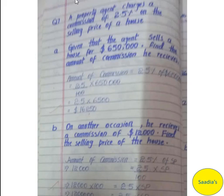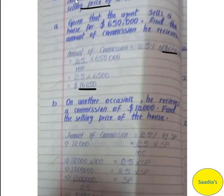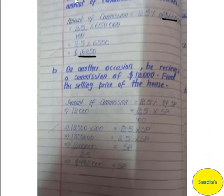Question number 7: a property agent charges a commission of 2.5% on the selling price of a house. The agent sells a house for $650,000. Find the commission he receives. Amount of commission equals 2.5% of the selling price, which is 2.5 over 100 multiplied by $650,000. Simplifying, the amount of commission is $16,250.